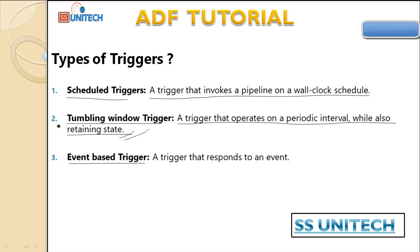I'll create a separate video for the schedule trigger and tumbling window trigger. For the event-based trigger, it responds to an event — for example, if any file arrives on Blob Storage, or if any table is created or data is inserted. When such events happen, the trigger executes the pipeline. That option is available under the event-based trigger.